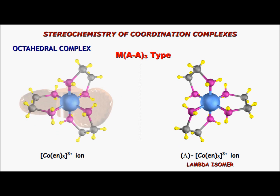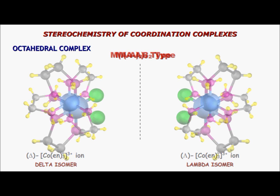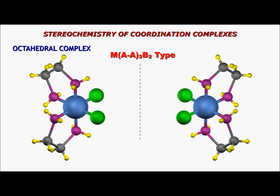Returning to the two optical isomers of the MAA2B2 type complex: following the same convention, one enantiomer is called the lambda isomer and the other is called the delta isomer.